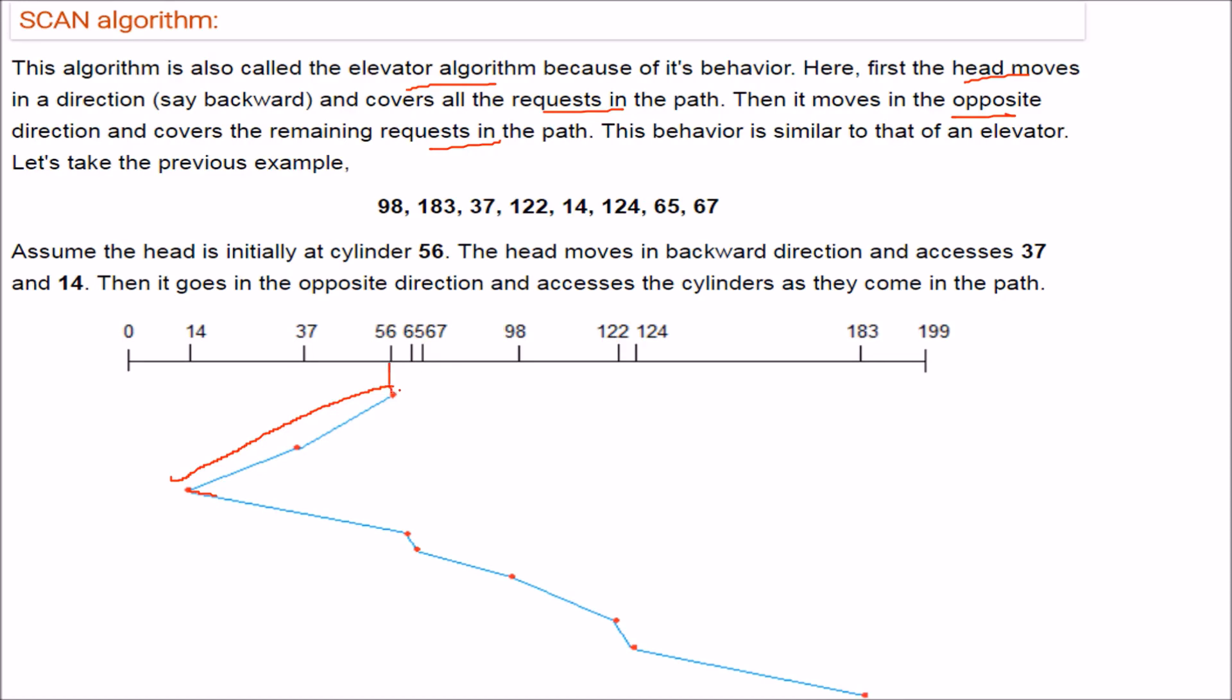Let us take again the same example. We have the head at 56. So what it will do? The next one on the left is 37, and to the left is 40. Then when there is no other point it needs to go, because there is nothing between 0 and 14 here. See nothing is there. So it will go to the nearest to 40, that is, it will go to the 65, then 67, and likewise it will call all the points in the serial manner.